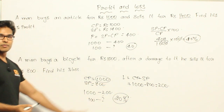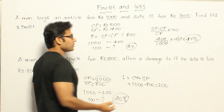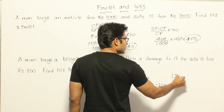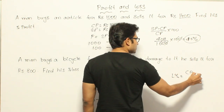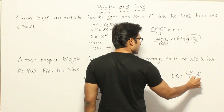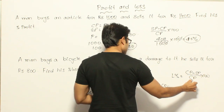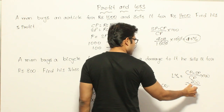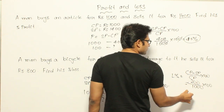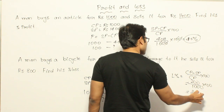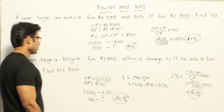Loss is 20 percent. Now how do we see it with the formula? Loss percent equals cost price minus selling price divided by cost price into 100. That is 200 divided by 1000 into 100, which gives 20 percent. So loss percent is 20 percent.